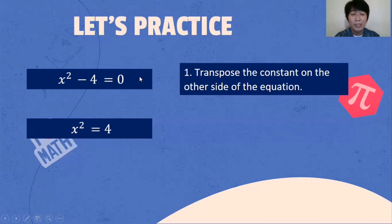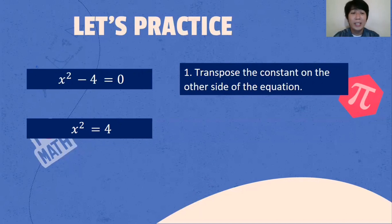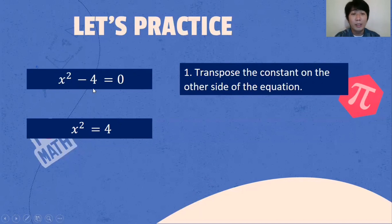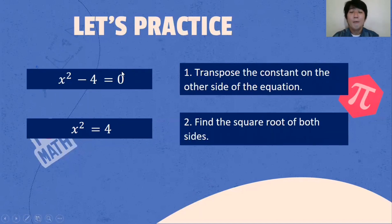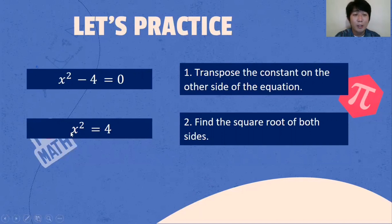We will be having plus 4 on the other side — 0 plus 4, that will be 4. We will just be transposing negative 4 on the other side, and when we transpose, the sign of the term will be changed: from negative it becomes positive, from positive it becomes negative. The next process: find the square root of both sides. Make sure there is no other constant except one on the side of X squared, then find the square root of both sides.